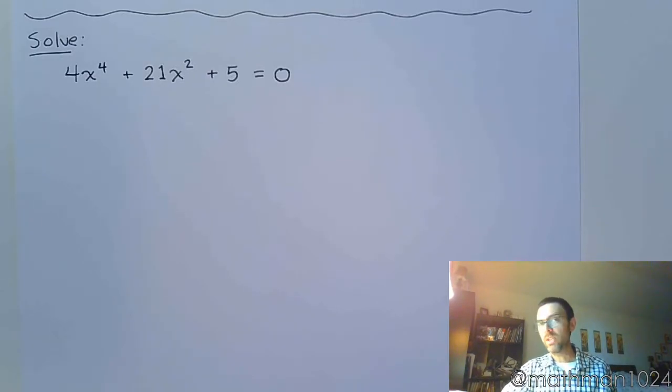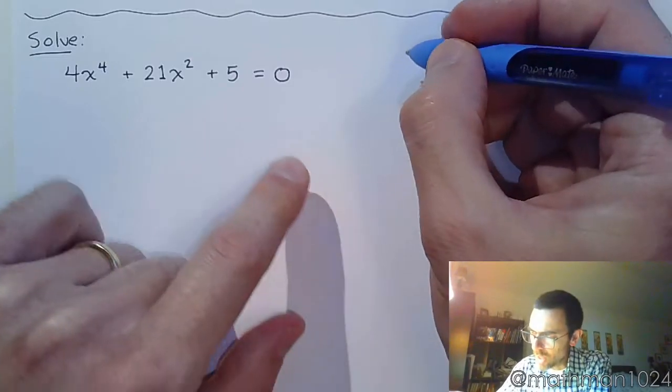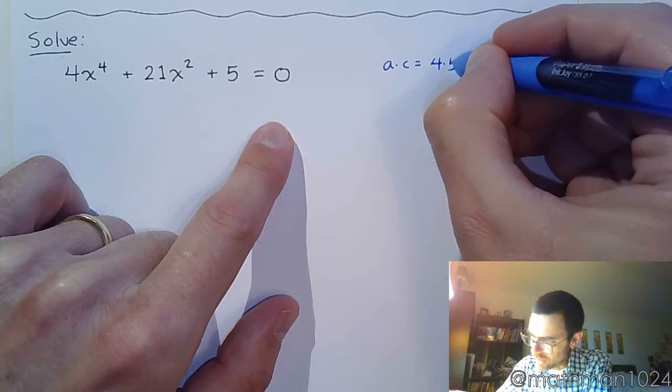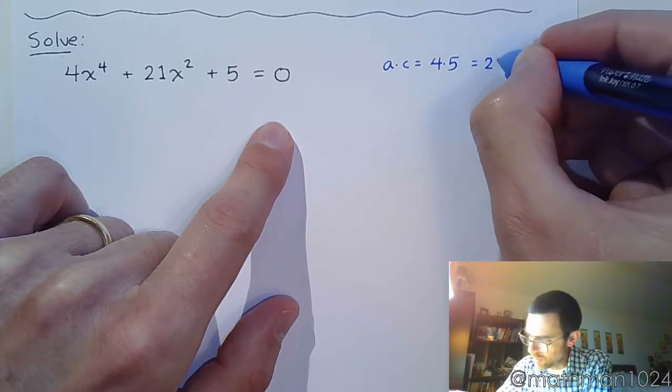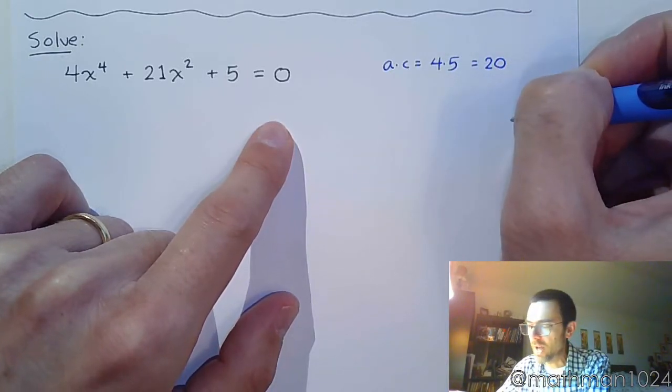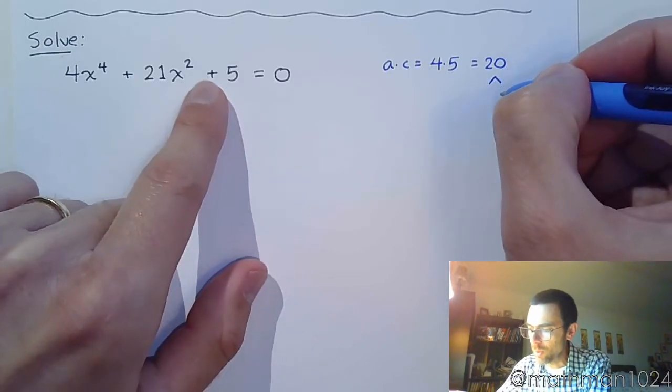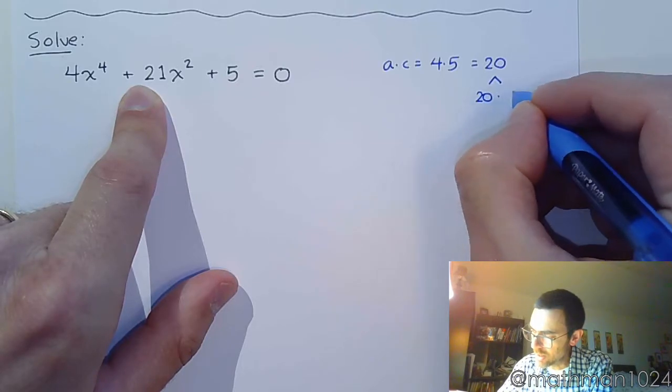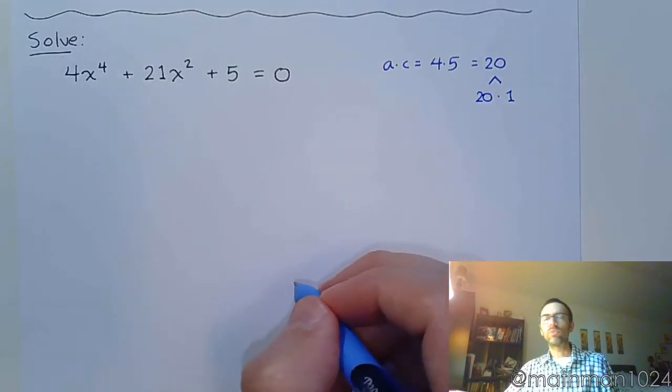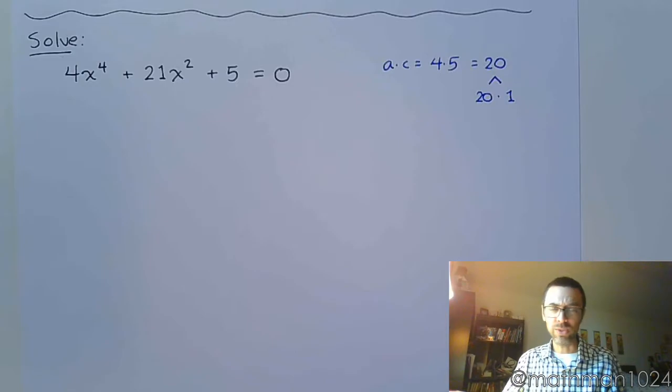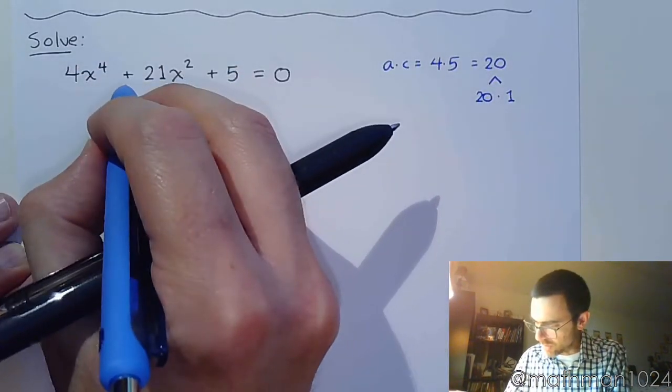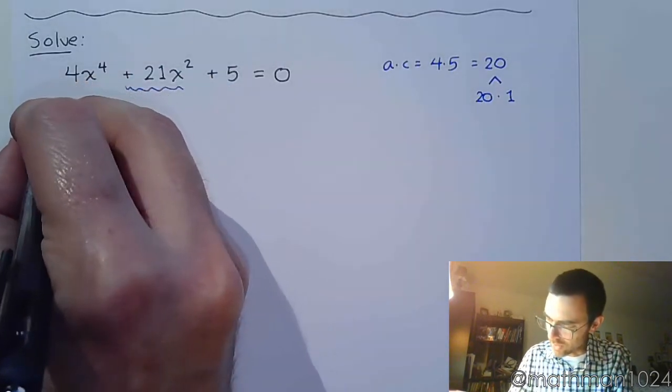Now I think we should use the AC method to get an idea about how things are going to break down. So if I do the AC method over here, a times c is 4 times 5, which gives us 20. We need to find factors of 20 that will add to give me 21. And so that ends up being 20 times 1 or 1 times 20. It doesn't really matter how you say that.